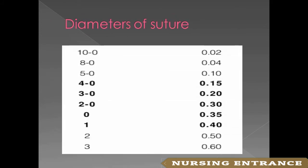Suture diameters by USP size: 10-0 = 0.02 mm; 8-0 = 0.04 mm; 5-0 = 0.1 mm; 4-0 = 0.15 mm; 3-0 = 0.2 mm; 2-0 = 0.3 mm; 0 = 0.35 mm; size 1 = 0.4 mm; size 2 = 0.5 mm; size 3 = 0.6 mm.